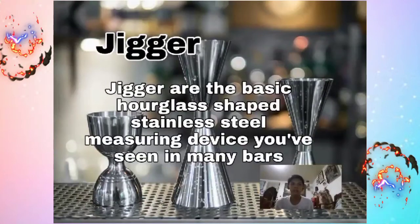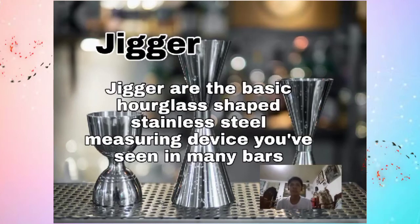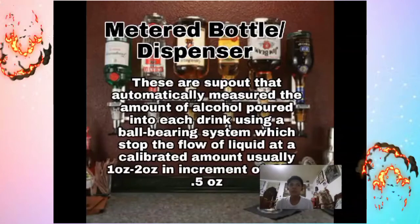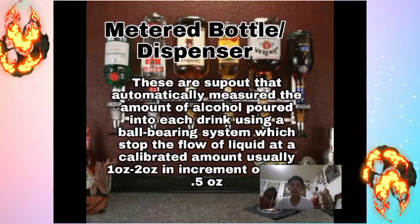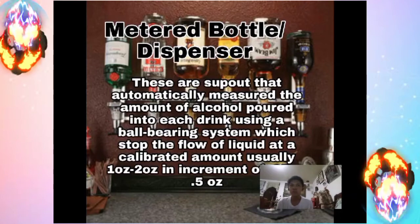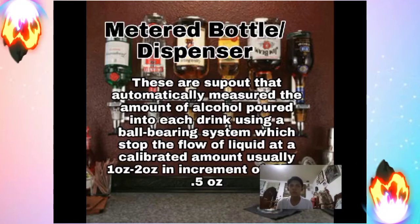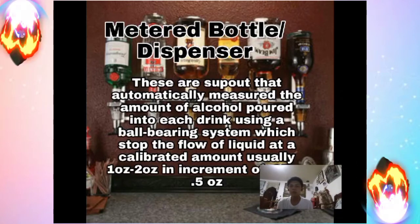Jiggers are the basic hourglass-shaped stainless steel measuring devices seen in many bars. These are inexpensive and easy to find at most hardware stores. Metered bottle dispensers are spouts that automatically measure the amount of alcohol poured into each drink using a ball-bearing system, which stops the flow of liquid at a calibrated amount — usually one to two ounces in increments of 0.25 or 0.5 ounce.